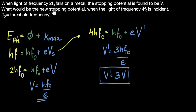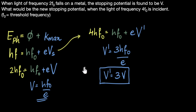What we find is that when we doubled the incident frequency, the stopping voltage did not double — it became triple. This is one of those tricky questions. If you work too fast, you might say frequency doubles so stopping voltage also doubles — but it doesn't. It's better to always go back to the basics and solve it that way.